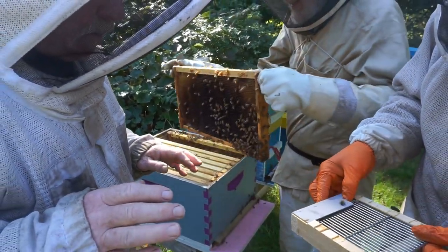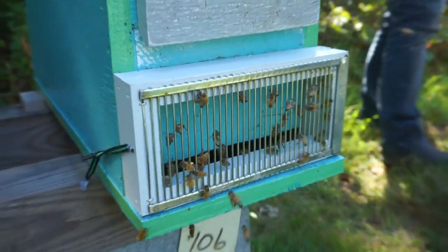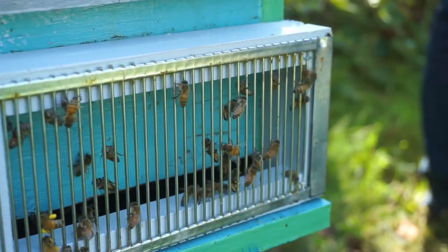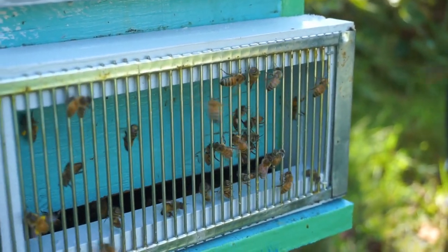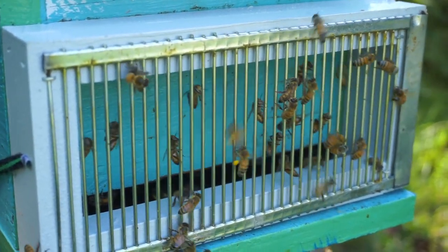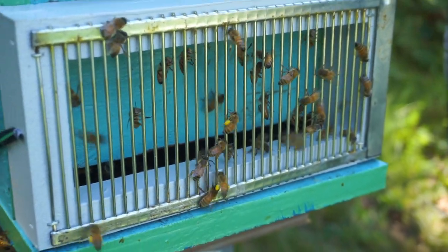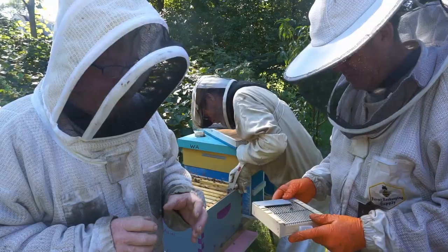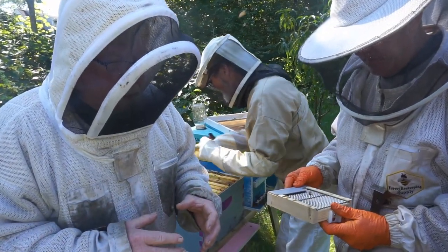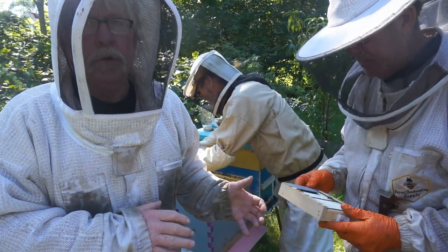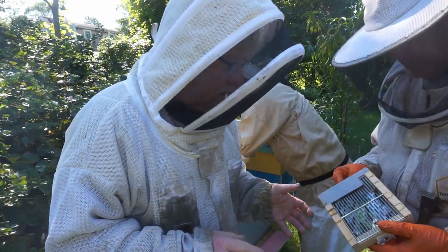It takes a little bit of a trained eye, but you want the largest thorax and the smaller abdomen. Because when drones emerge, their semen hasn't migrated yet, so their abdomen is larger actually when they just emerge than when they become mature. So that's one of the things we try to look for.